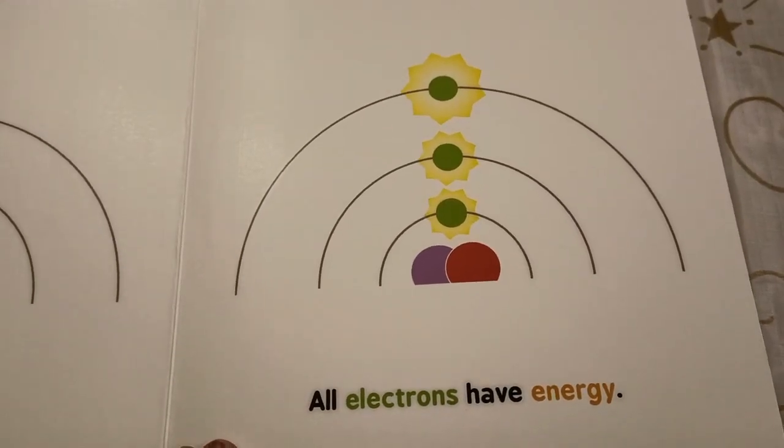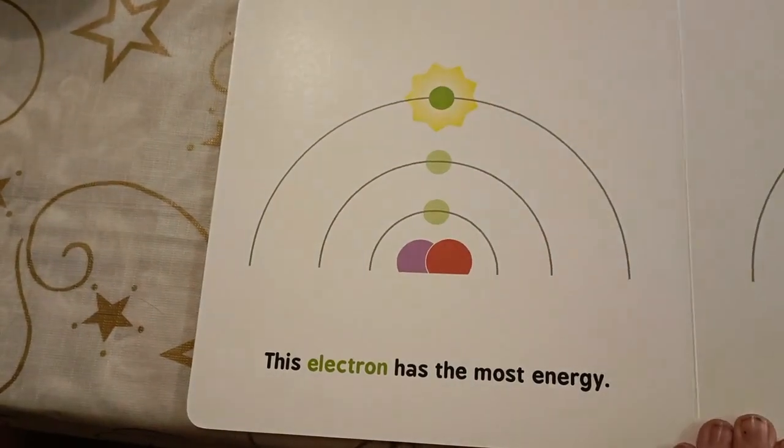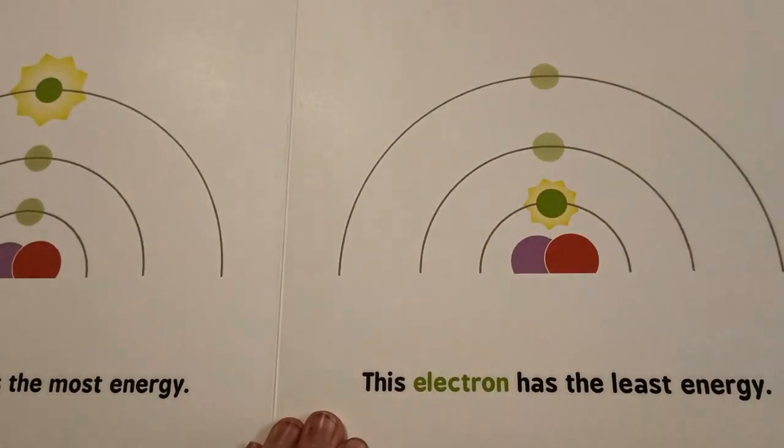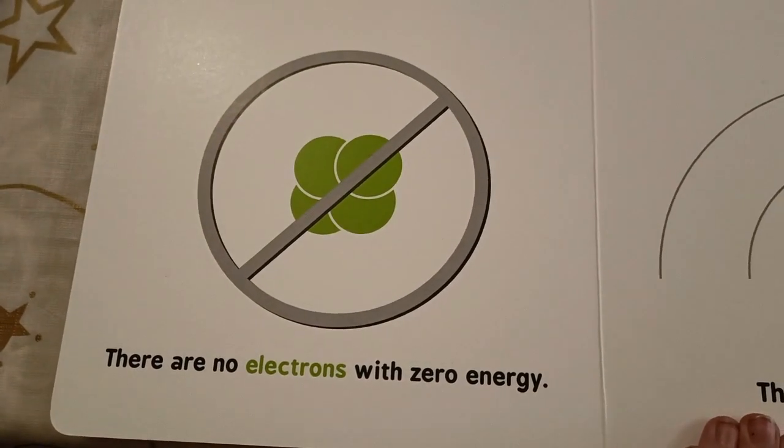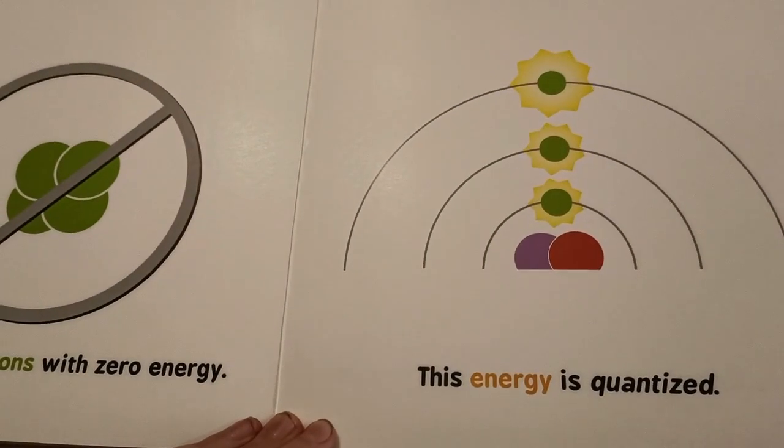All electrons have energy. This electron has the most energy. This electron has the least energy. There are no electrons with zero energy. This energy is quantized.